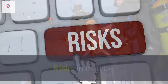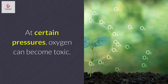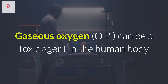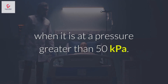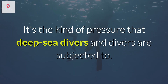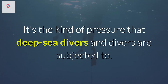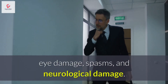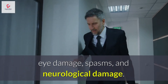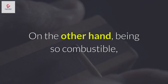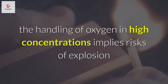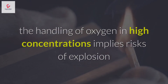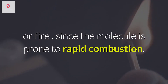Risks in its use. Gaseous oxygen can be a toxic agent in the human body when it is at a pressure greater than 50 kilopascals — the kind of pressure that deep-sea divers are subjected to. Symptoms of oxygen poisoning include seizures, eye damage, spasms, and neurological damage. On the other hand, being so combustible, the handling of oxygen in high concentrations implies risks of explosion or fire, since the molecule is prone to rapid combustion.